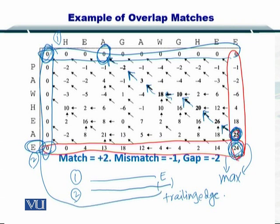This one and the rest of the sequence: E, A, W, H, E, A is here and H, E. So A, G, A, W, G, H, E, E is here. And of course there is H, E before that. So this sequence is the leading edge.